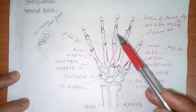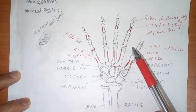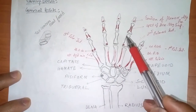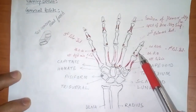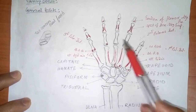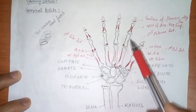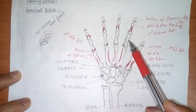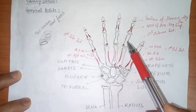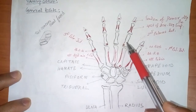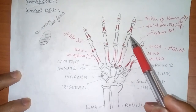We know that there are 14 phalanges in total in each hand — 3 for each finger and 2 for the thumb. So in total there are 14 phalanges, and each phalange has a base, a shaft, and a head.